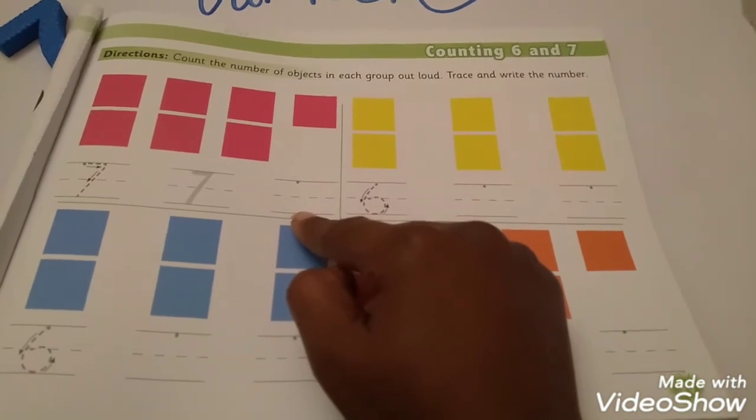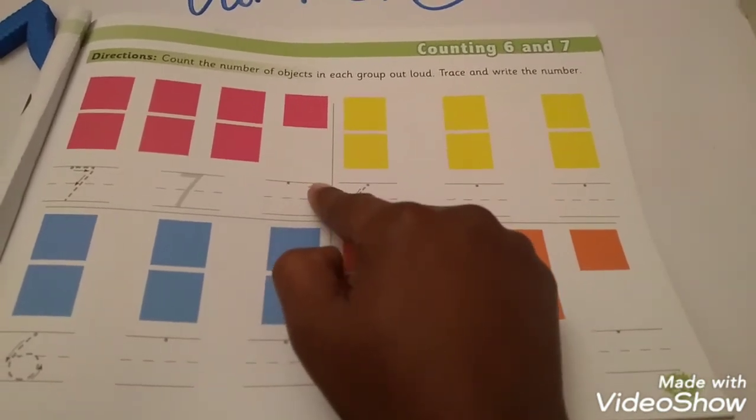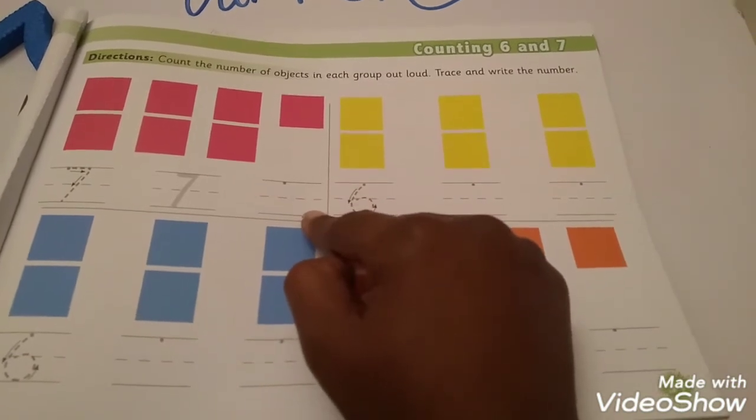Remember, the number 7 starts with a sleeping line. Standing line. Okay?